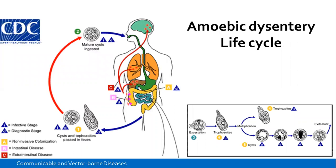Dysentery itself is not what many people think — it's not diarrhea. It simply means that the enteric system, or more importantly the intestinal tract, has some sort of injury or has been affected to the point that it is abnormal. That is where the name dysentery comes from. The amoebic dysentery life cycle is mostly made up of two stages of the protozoan itself.